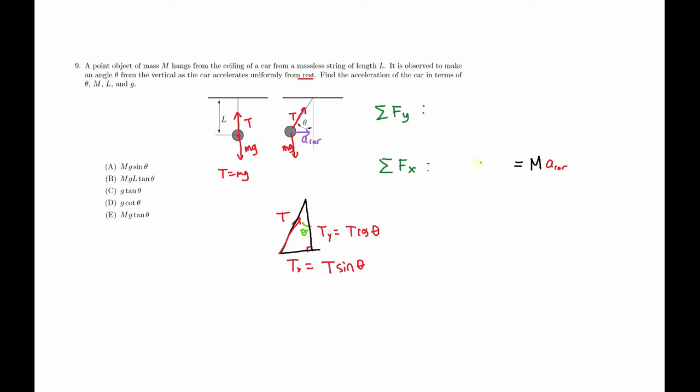I'm going to write that down in our force net. So for y, T cosine theta equals mass times gravity. Notice how the force due to gravity is canceling out with T times cosine theta, which is the upward direction. So mass times gravity.